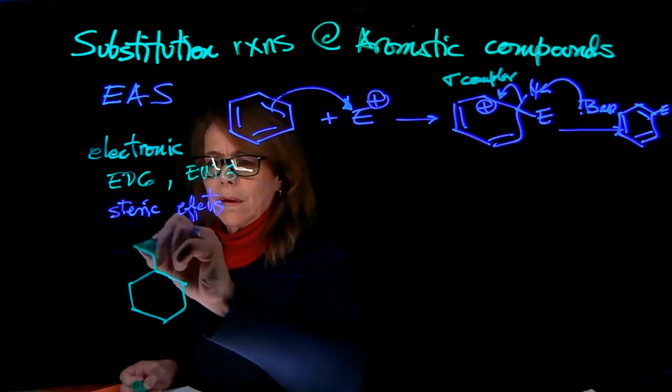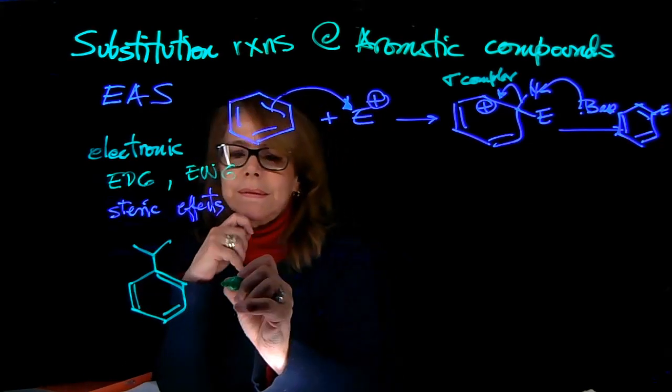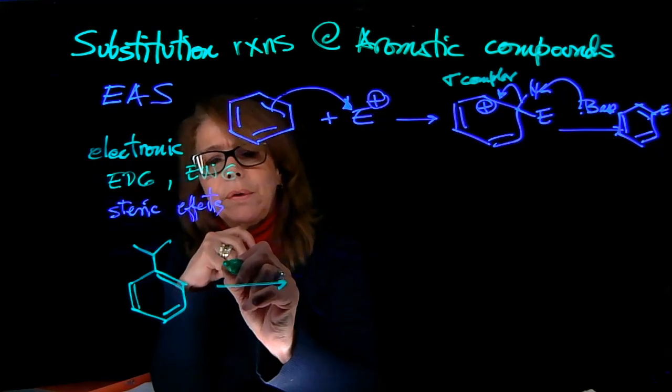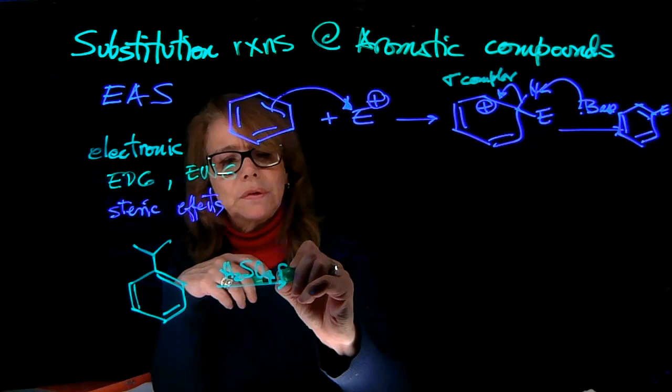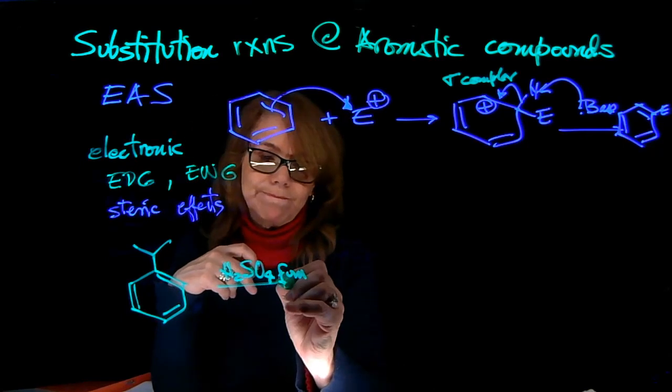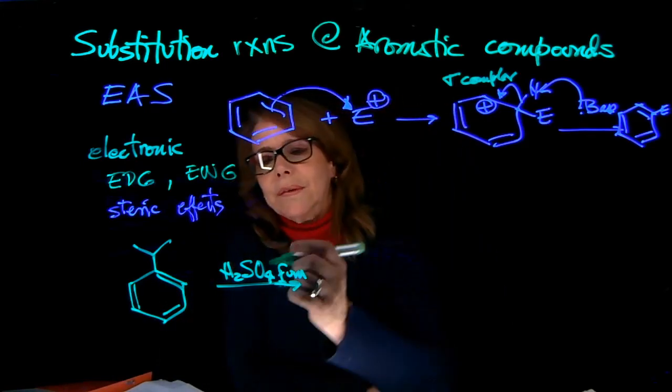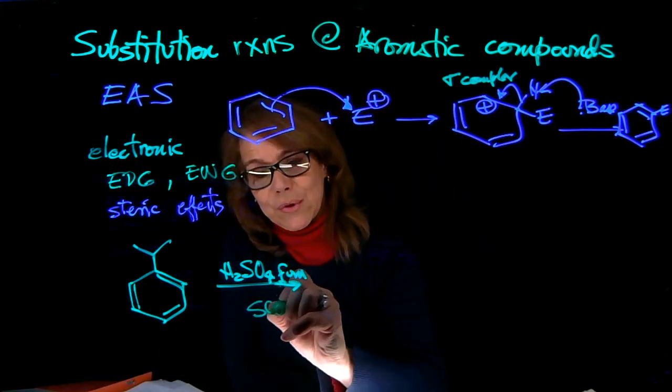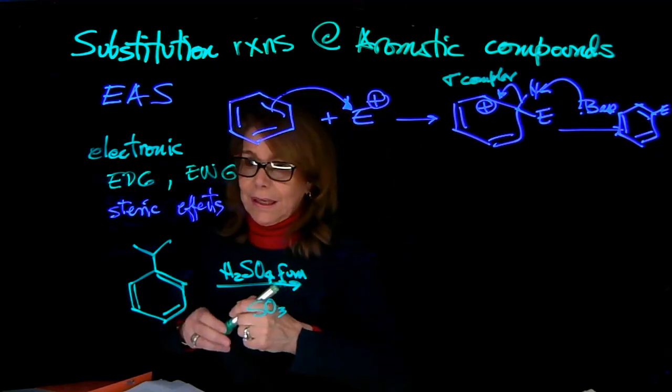This is isopropyl benzene. And say that I'm doing here fuming sulfuric acid. That is a condition to create a benzene sulfonic acid. Fuming means you have SO3 gas there.